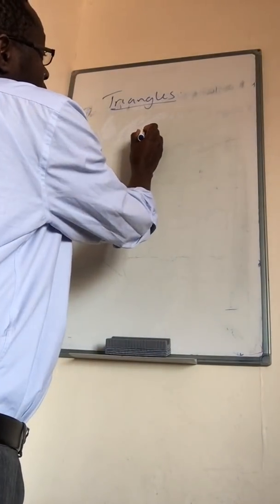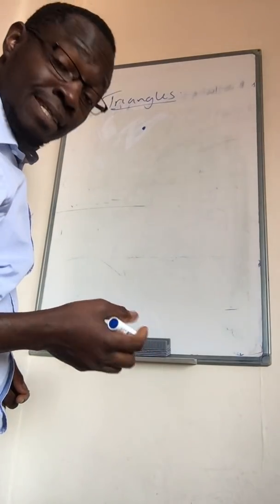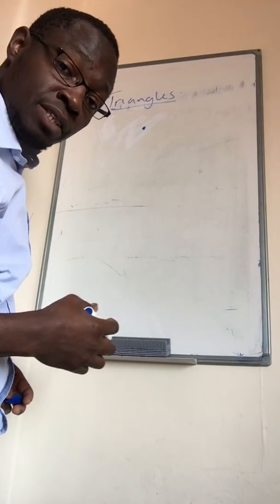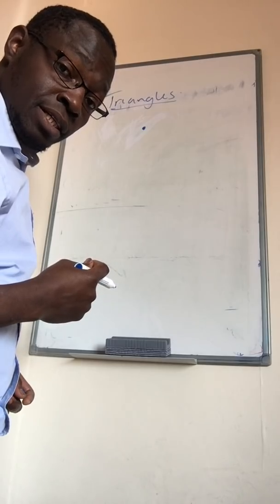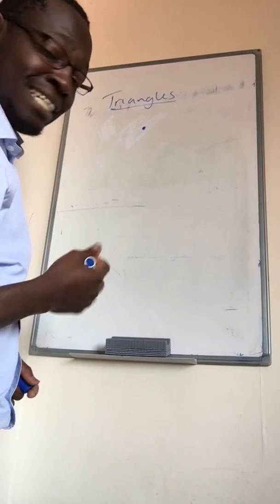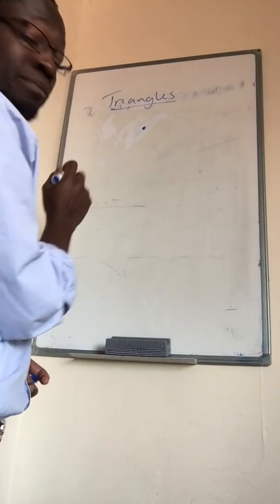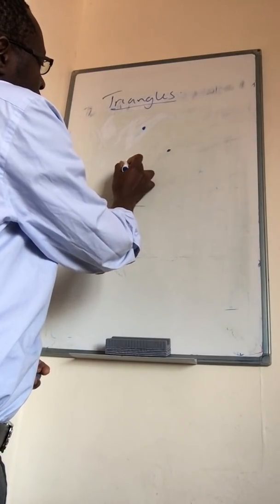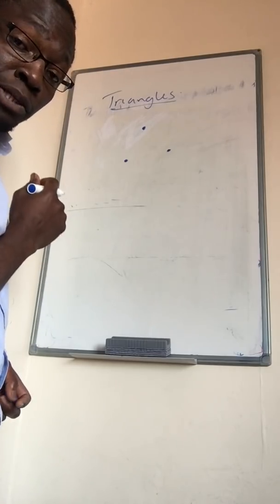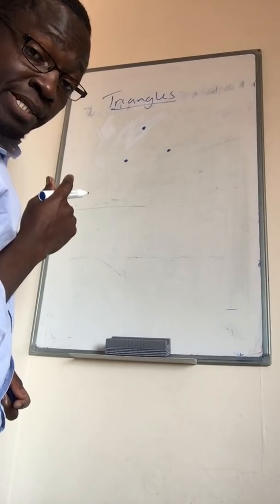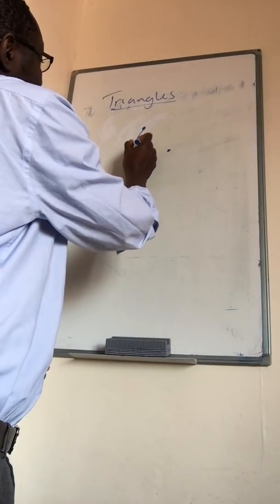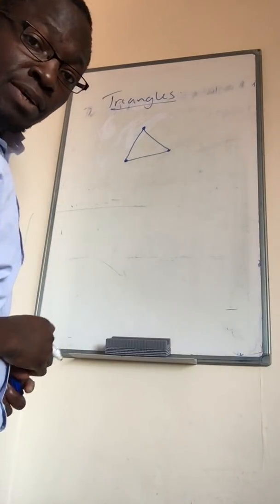We know that a point is the beginning of everything — everything that you can think of, including life, including the universe. Everything begins from a point and everything will possibly end at a point. So let us look at the point as far as this triangle is concerned. Let's say we have one point, then another point, then another point. From there, we can deduce the shape of a triangle because a triangle has three vertices, meaning it has three points. When we join those points together with line segments, we form what is known as a triangle.